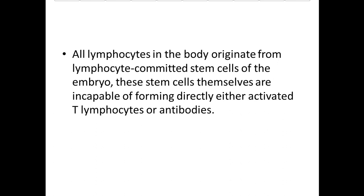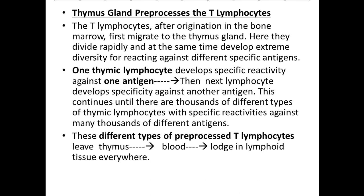When pre-processing of T and B lymphocytes occurs, all lymphocytes originate from lymphocyte-committed stem cells of the embryo, which are incapable of directly forming activated T-lymphocytes or antibodies. The thymus gland pre-processes T-lymphocytes: after originating in bone marrow, T-lymphocytes migrate to the thymus, divide rapidly, and develop extreme diversity for reacting against different specific antigens. Each thymic lymphocyte develops specific reactivity against one antigen, continuing until thousands of different types exist, which then leave the thymus and lodge in lymphoid tissue everywhere.